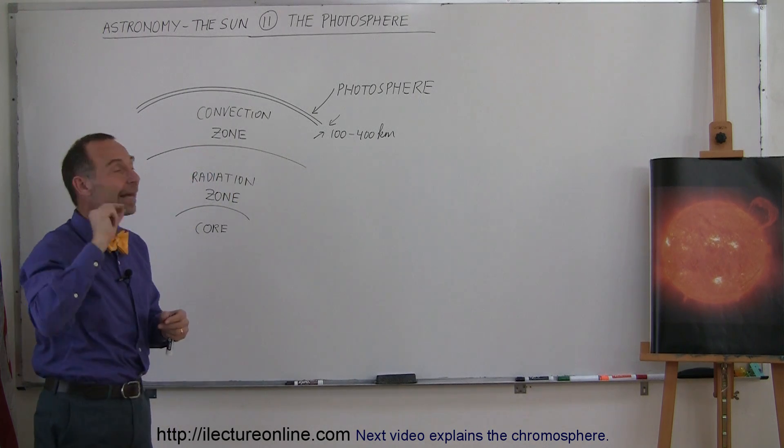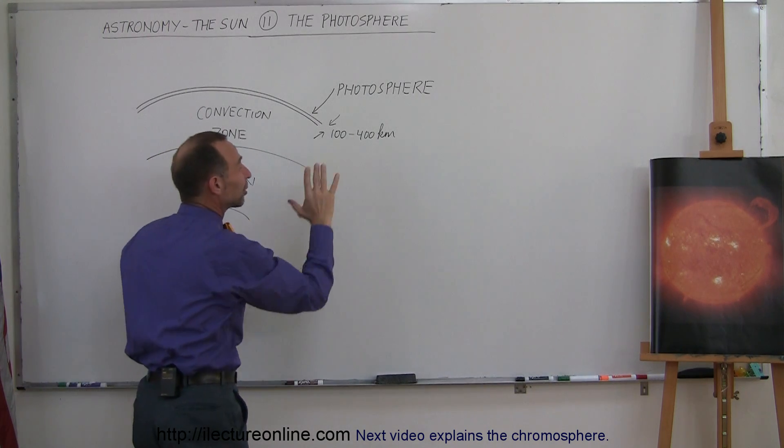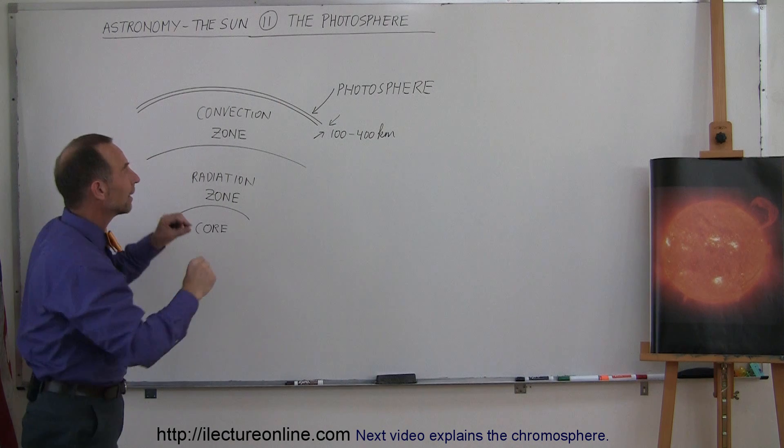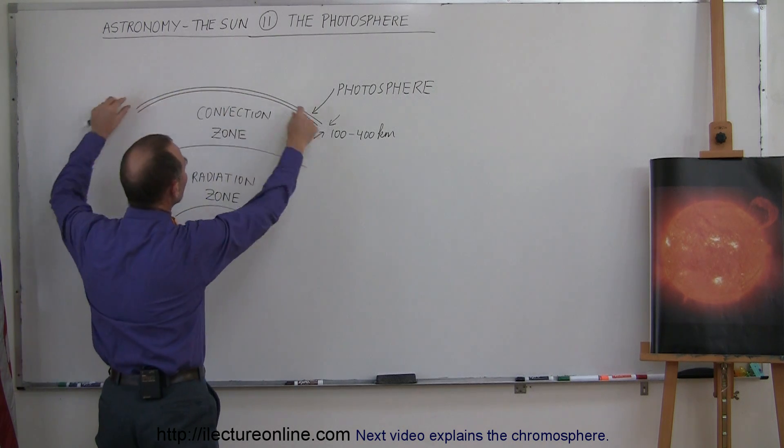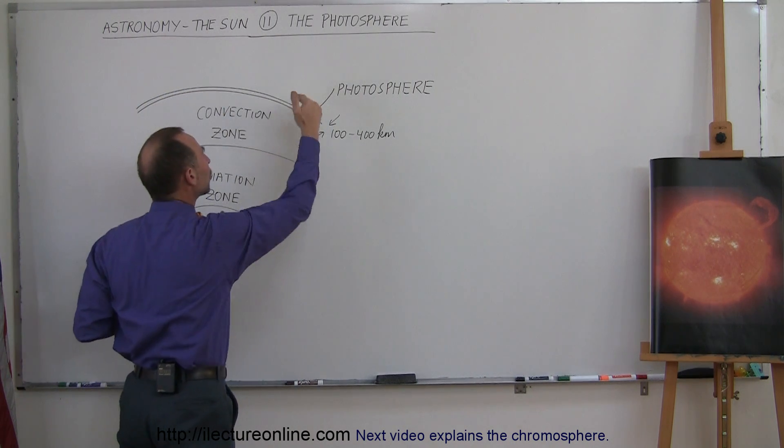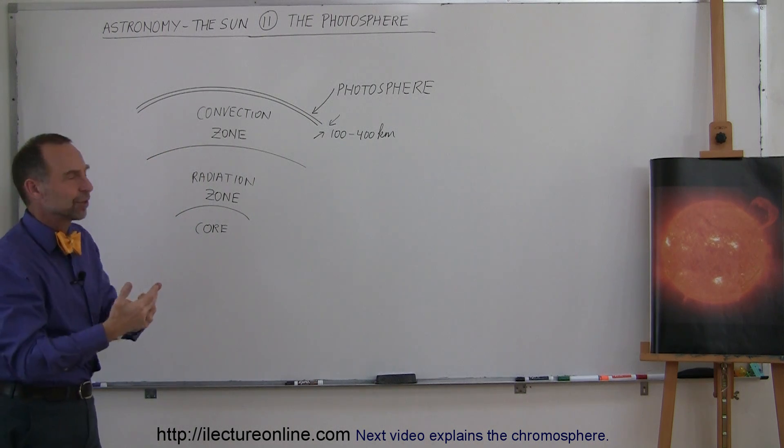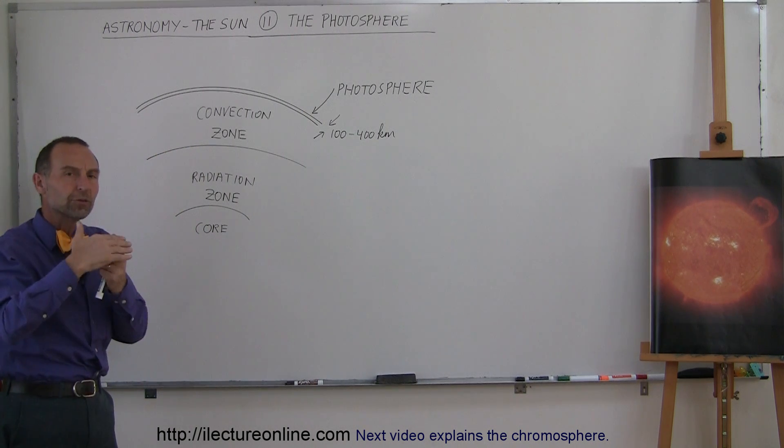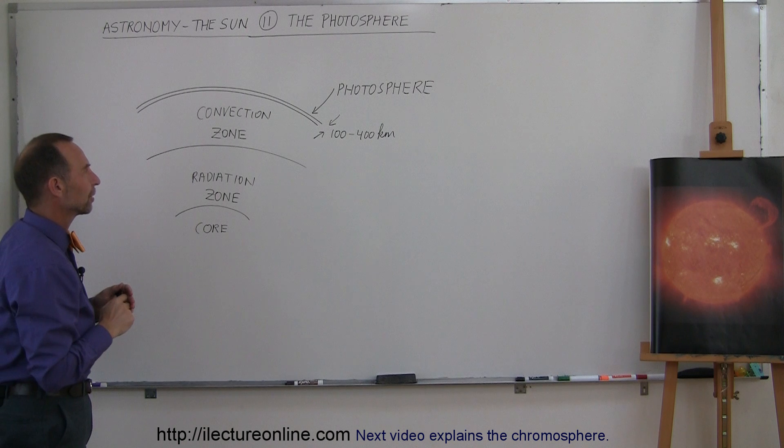It's a very thin layer, about 100 to 400 kilometers thick, that is really the physical boundary of the Sun. Beyond the photosphere, we actually can talk about being in the atmosphere of the Sun, which is called the chromosphere. We'll talk about the chromosphere later.